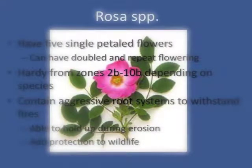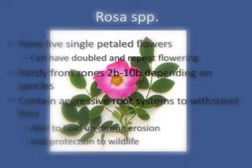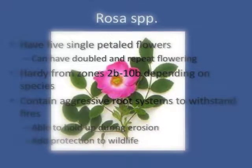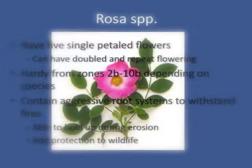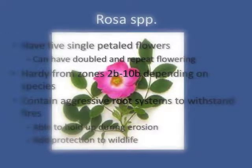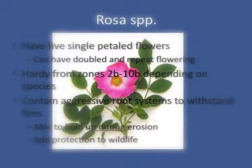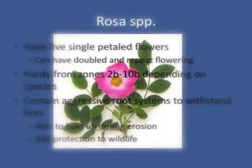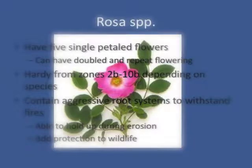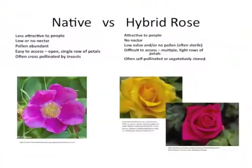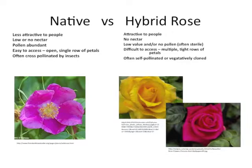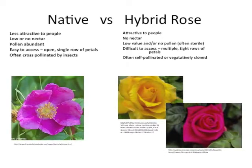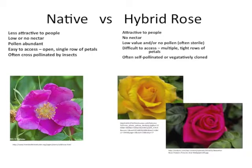The Rosa species have five single-petaled flowers, which can have doubled and repeat flowering. They are hardy from zones 2b to 10b depending on the species. They also contain aggressive root systems to withstand fires, and these root systems are able to hold up during erosion and add protection to wildlife. Native and hybrid roses vary on several aspects in terms of pollinator-friendly attributes, with pros and cons for the gardener.